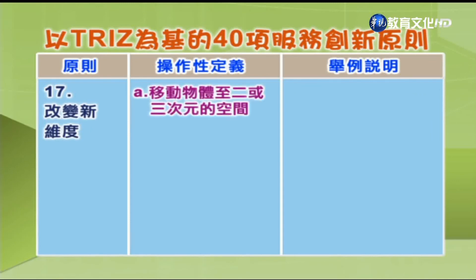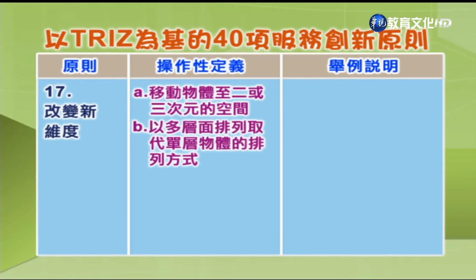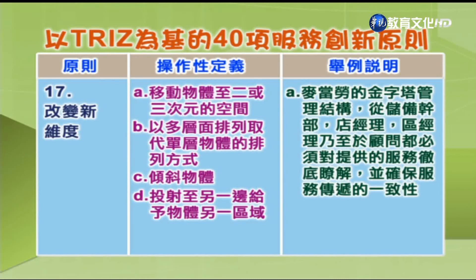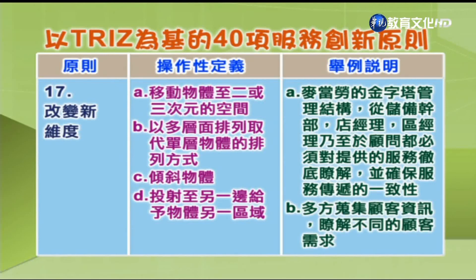第17项「改变新维度」：A.移动物体至二或三次元的空间；B.以多层面排列取代单层物体的排列方式；C.倾斜物体；D.投射至另一边给予物体另一区域。举例：A.麦当劳的金字塔管理结构，从储备干部、店经理、区经理乃至顾问，都必须对提供的服务彻底了解并确保服务传递的一致性；B.多方搜集顾客资讯，了解不同的顾客需求。